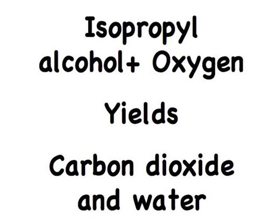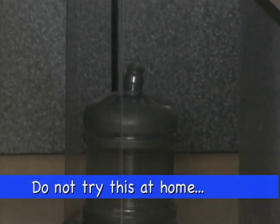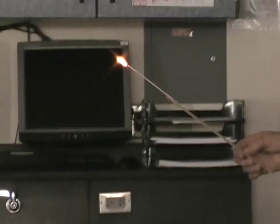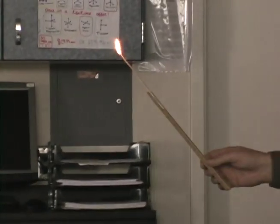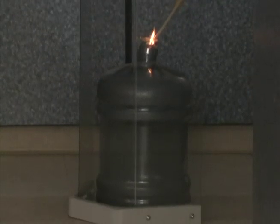Here's a tough one. Isopropyl alcohol and oxygen yields carbon dioxide and water. Okay, you got your splint, you got your water bottle with alcohol in it. You got your splint. It's all over there. Oh crap.